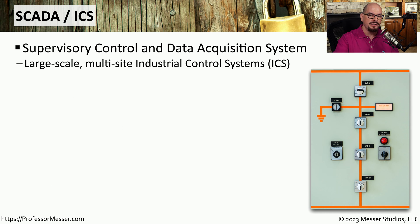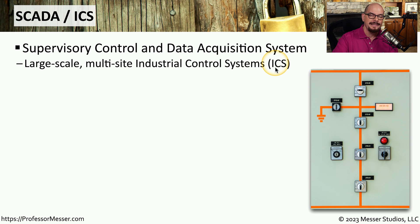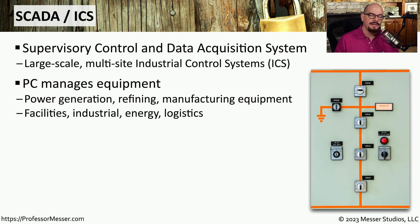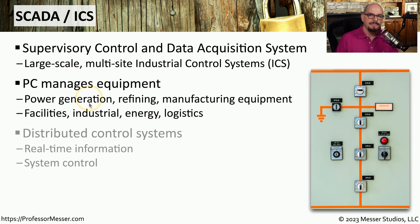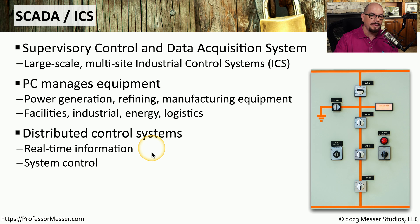If your organization uses large industrial equipment, then you're probably familiar with SCADA — the Supervisory Control and Data Acquisition System — also referred to as the Industrial Control System, or ICS. This is a combination of network connectivity and platforms that manage, monitor, and control all of these industrial devices. So if your organization manages power generation, manufacturing equipment, or other large-scale industrial systems, you're probably using SCADA and ICS. These usually take advantage of a distributed control system to provide real-time information on how the system is performing and monitoring the ongoing process.